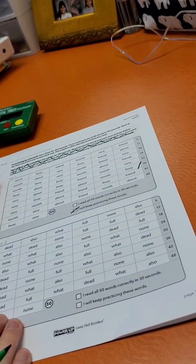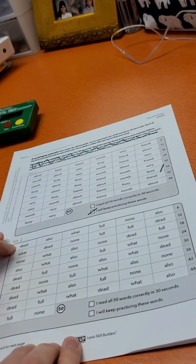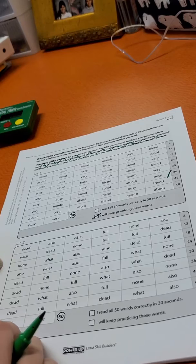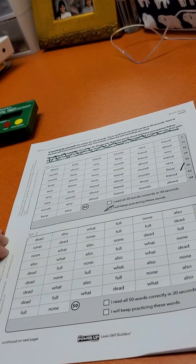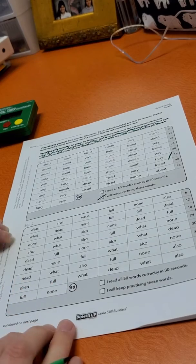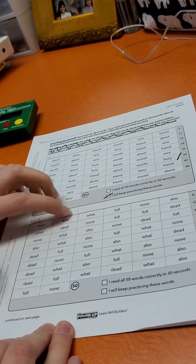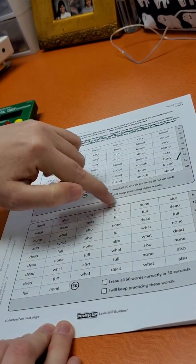So do you see how you will be doing that? So you'll do that for each section. So the words here, I just read these to you. I'll go ahead and read one row for you guys for here so you know how to say the words. Dead, also, what, full, none.